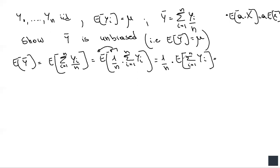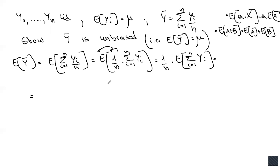Now we have one over n times the expected value of y1 plus y2 plus y3 all the way up to yn. Here we use another property of the expected value: we can split the expectation across the summation. The property is that the expected value of a plus b equals the expected value of a plus the expected value of b. A piece of advice: when dealing with summations inside expectations or variances, just split up the summation and write it out explicitly.